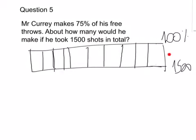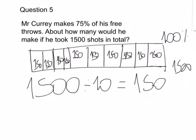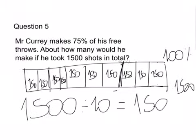So here's 100% and here's 1500 shots because that's what he did in total. What we do now is 1500 divided by 10, which is 150. So it's 150 in each one of those. So here is 70%.